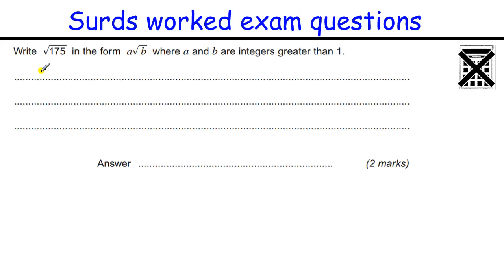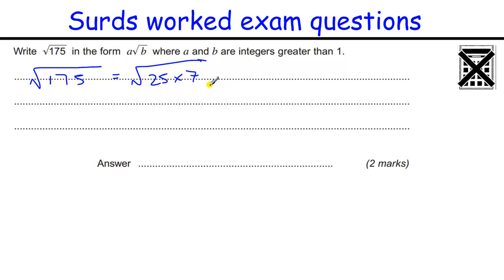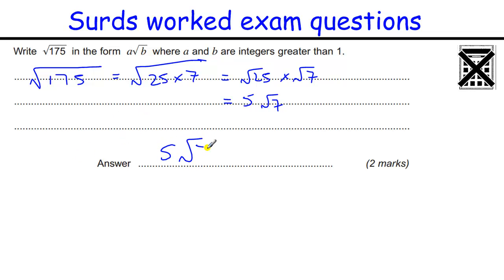Same sort of question. 25 will go into this quite nicely. The square root of 175 equals the square root of 25 times 7 — 7 times 25 is 175. So that's the square root of 25 times the square root of 7, which is 5 root 7. There's the answer in the form A root B: A would be 5, B would be 7.